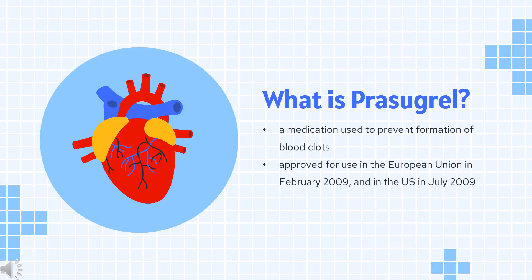Prasugrel, sold under the brand name Effient in the US, Australia, and India, and Efient in the EU, is a medication used to prevent formation of blood clots. It is a platelet inhibitor and an irreversible antagonist of P2Y12 ADP receptors, and is of the thienopyridine drug class.